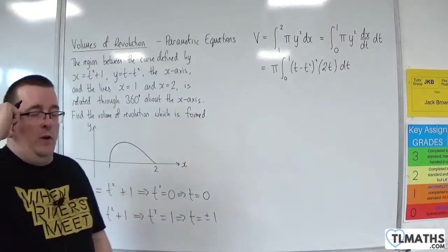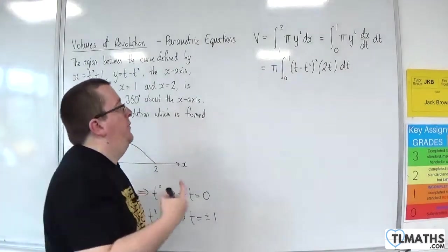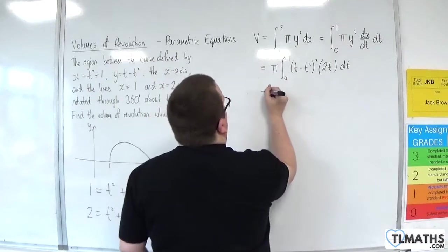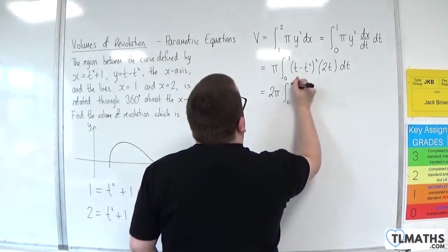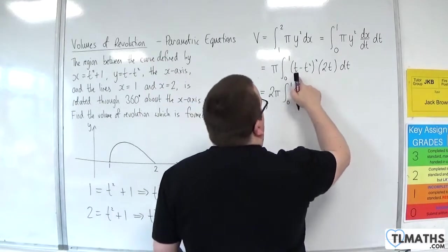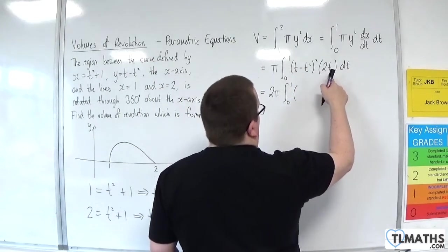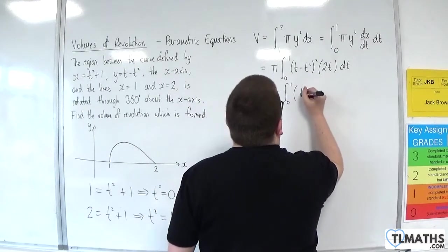So I think what I'll do is I'll bring the 2 out to the front of the integral as well. I've also got to expand the brackets out. So we're going to have t squared, and then I'm going to multiply that by t. So we're going to have t cubed.